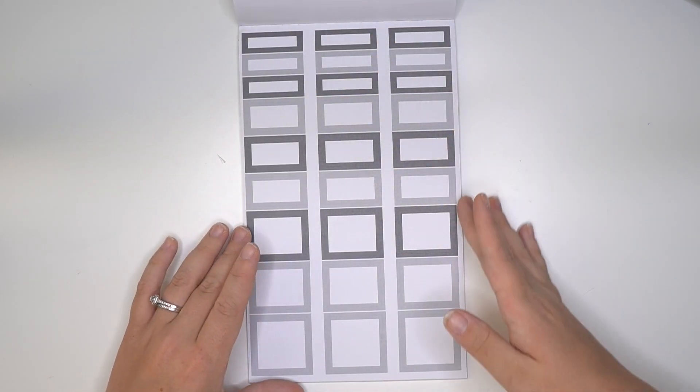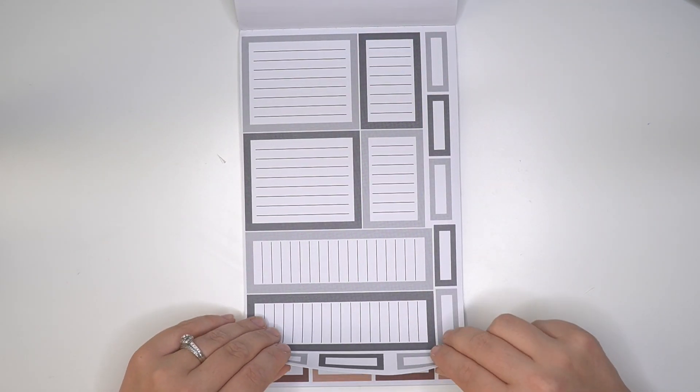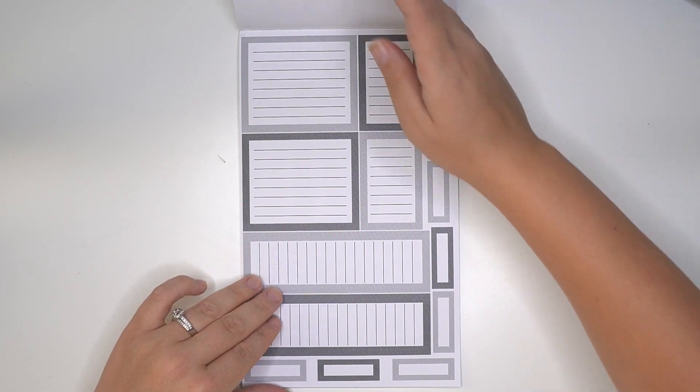So you get multiple pages of each of those, and then you get lines as well. Amazing.